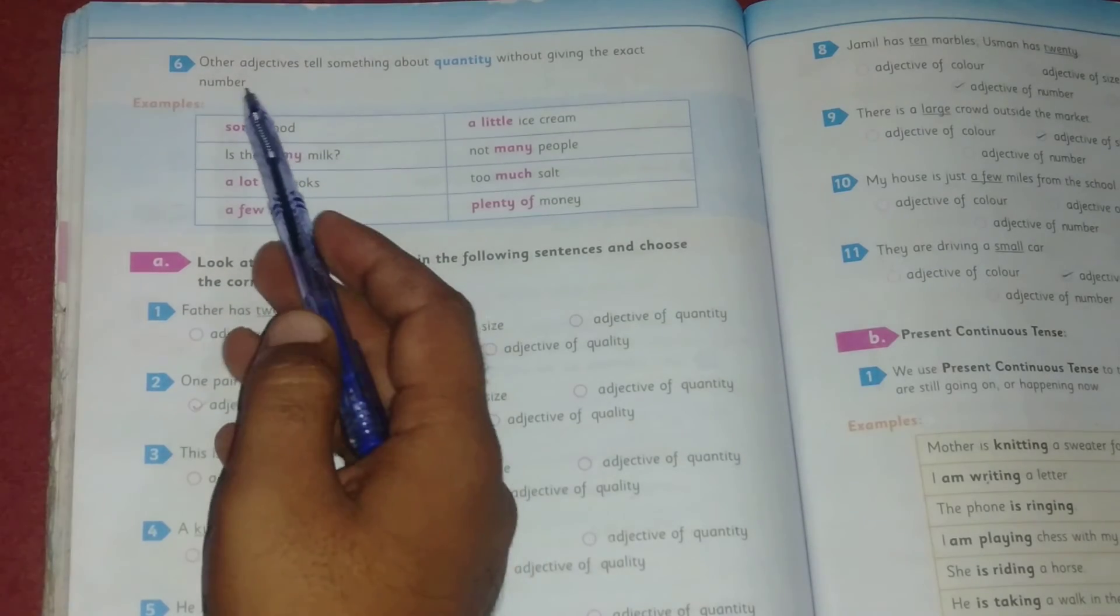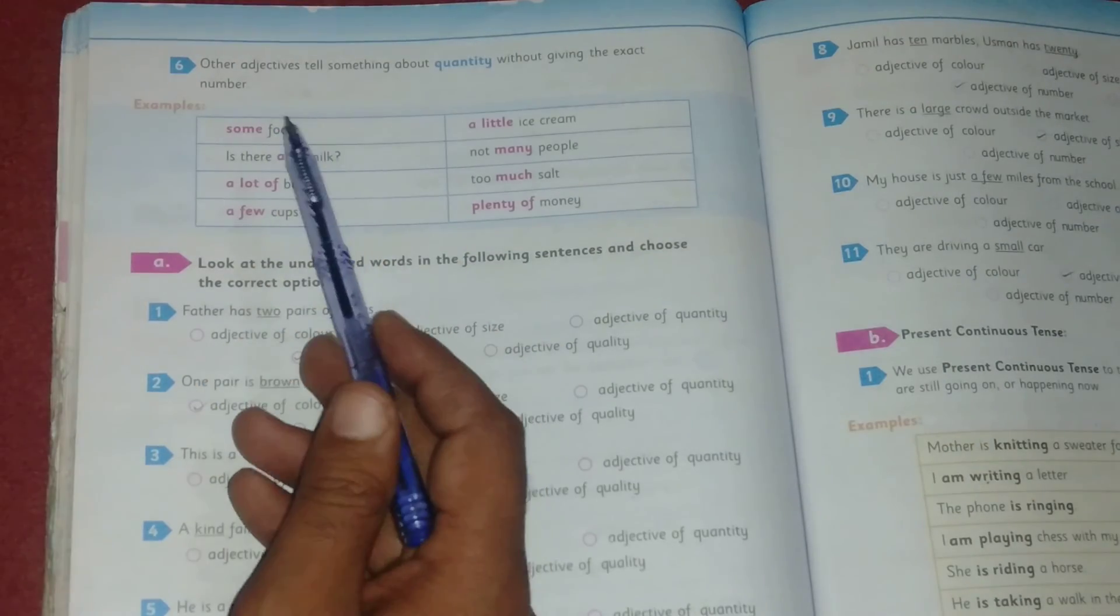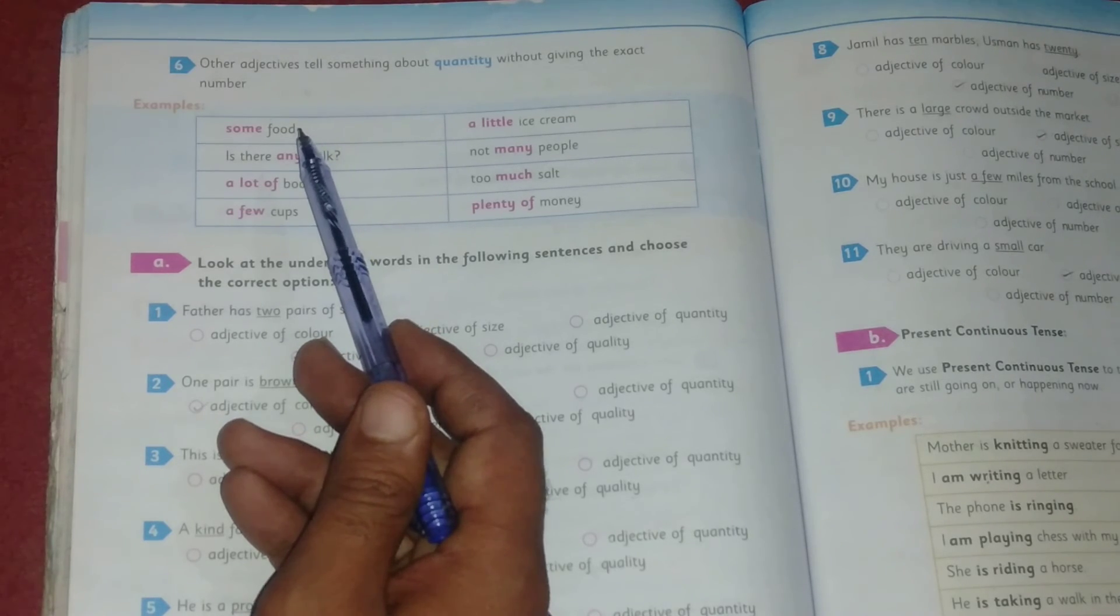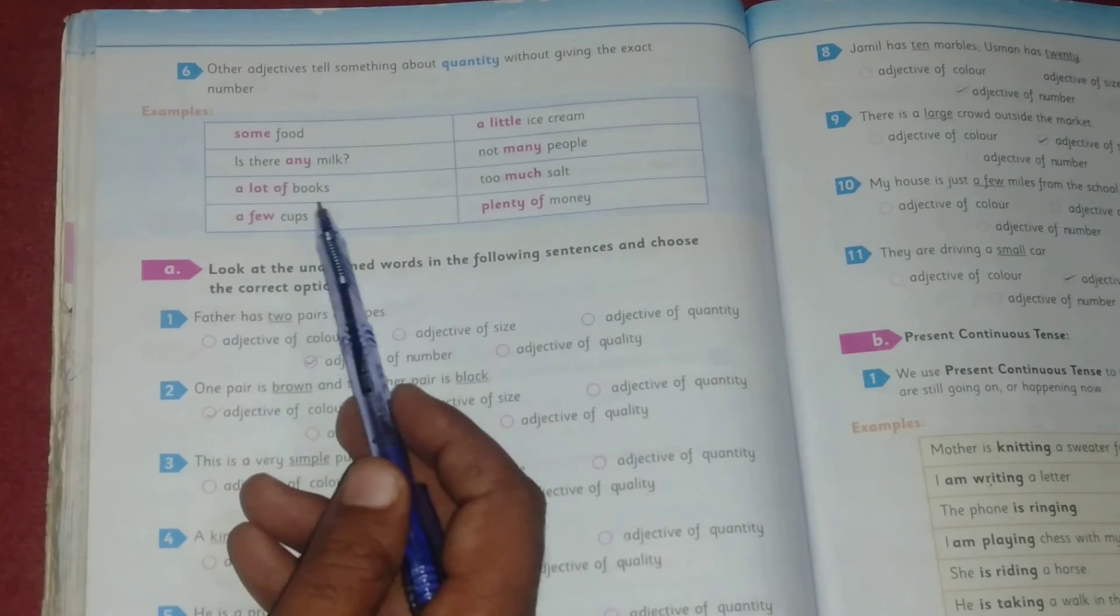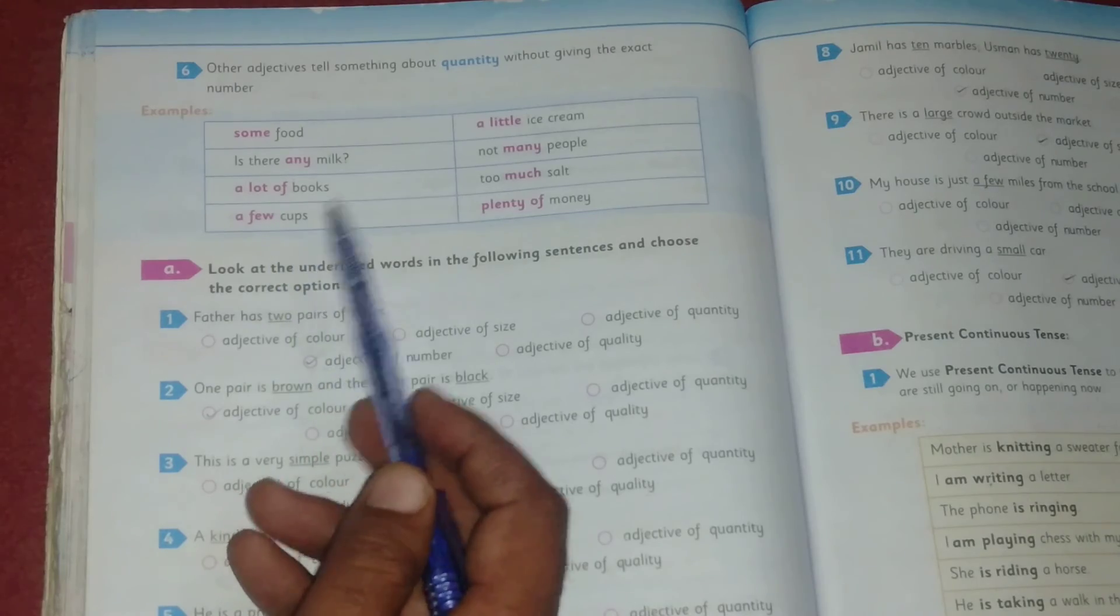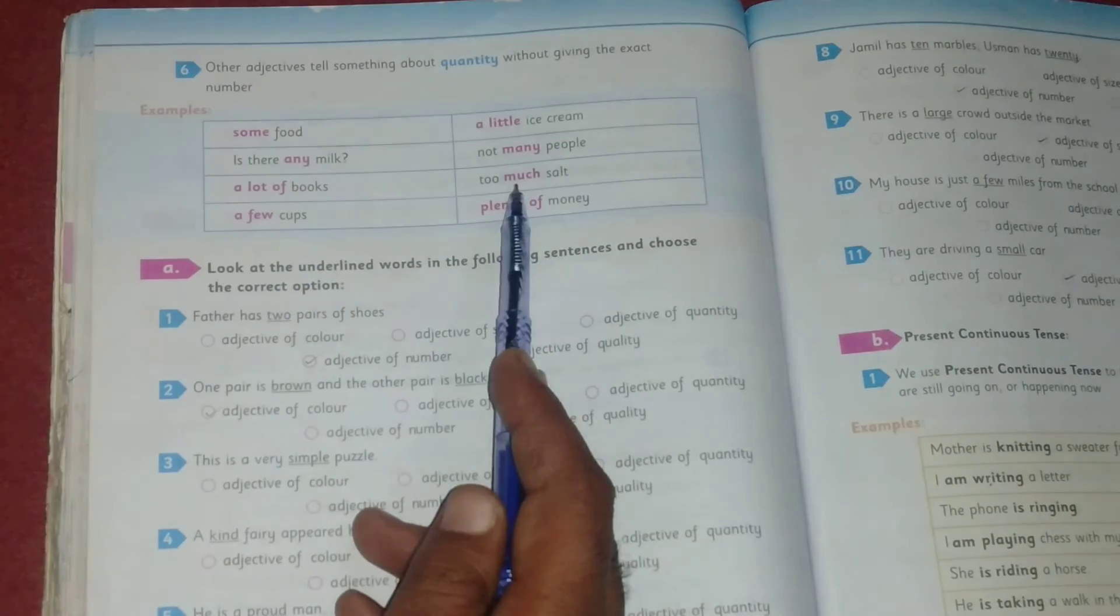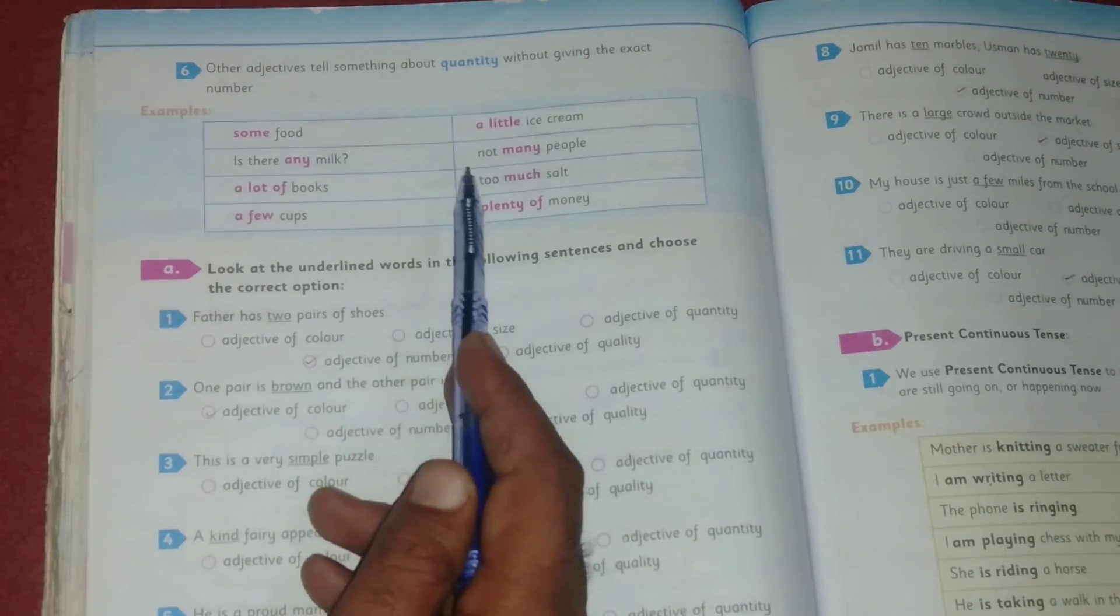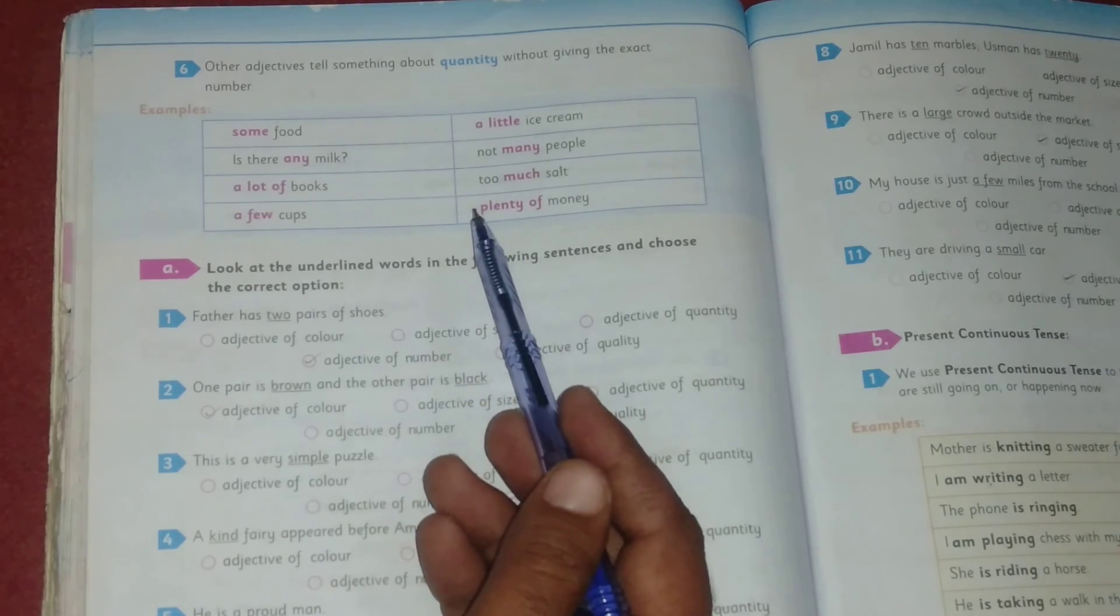Number six: other adjectives tell something about quantity without giving the exact number. Sixth is adjective of quantity. It tells about the exact number of the noun. Some food, is there any milk, a lot of books, a few cups, a little ice cream, not many people, too much salt, plenty of money. All these are adjectives of quantity. It tells about the exact number.